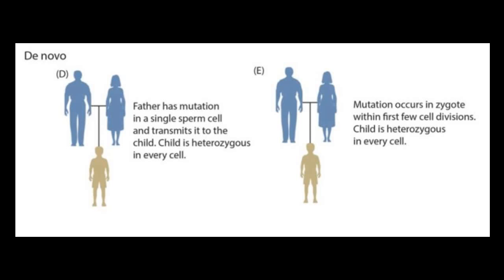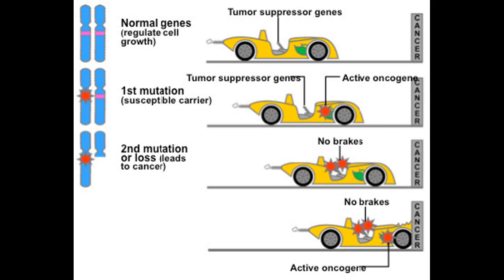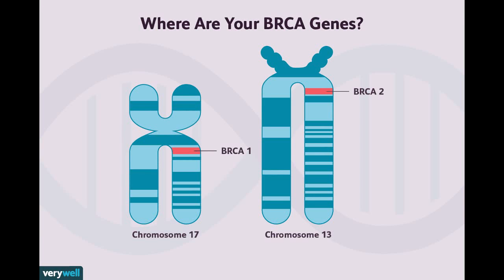Breast cancer is very common in females with a predisposition to genetics, though other reasons exist too. When genetic factors are involved, patients can inherit it. A lump in the breast and pain are common signs and symptoms. Two types of gene sets are commonly involved in developing cancer: tumor suppressor genes and oncogenes. Tumor suppressor genes regulate cell division and control cell proliferation, while oncogenes induce uncontrolled cell growth — either causing cancer through dysregulation of the cell cycle. BRCA genes are tumor suppressor genes that regulate cell division.